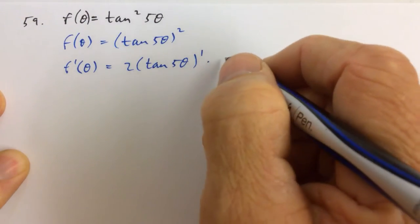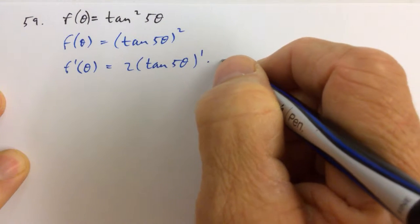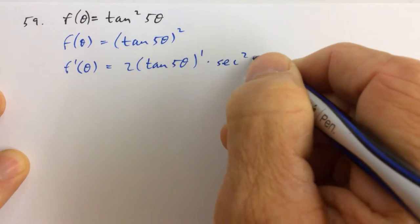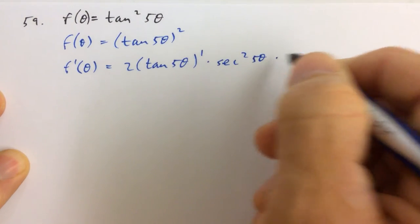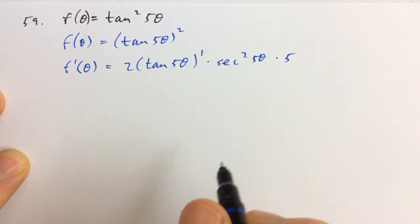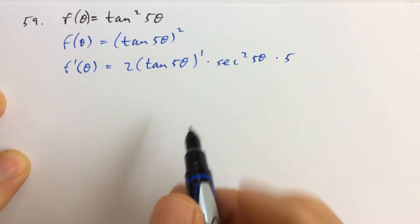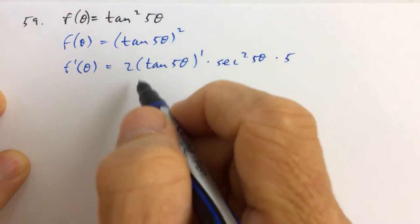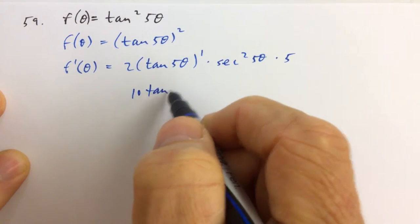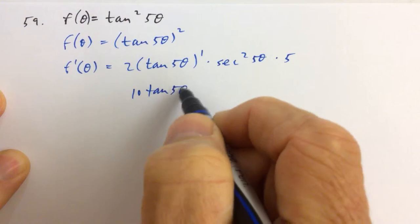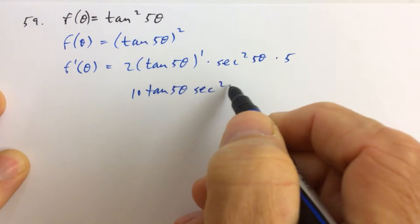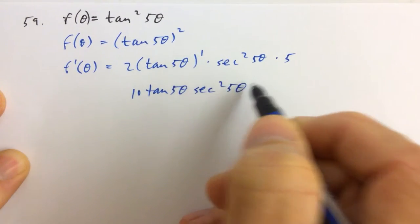The derivative of the tangent of anything is the secant squared of that anything. But then we multiply by the derivative of the anything. So we have 5 times 2 is 10, times the tangent of 5θ, times the secant squared of 5θ.